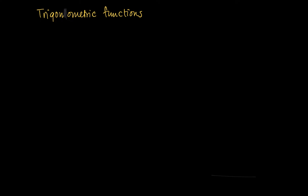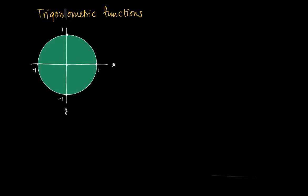In this clip I will look at trigonometric functions. Here we see the xy plane and the green is the unit circle, which means that on the boundary of the unit circle we find points with distance 1 to the origin. Suppose we have a point with coordinates xy, then we see x along the x-axis and y along the y-axis. We also see a right angle triangle here, with the angle given by phi.